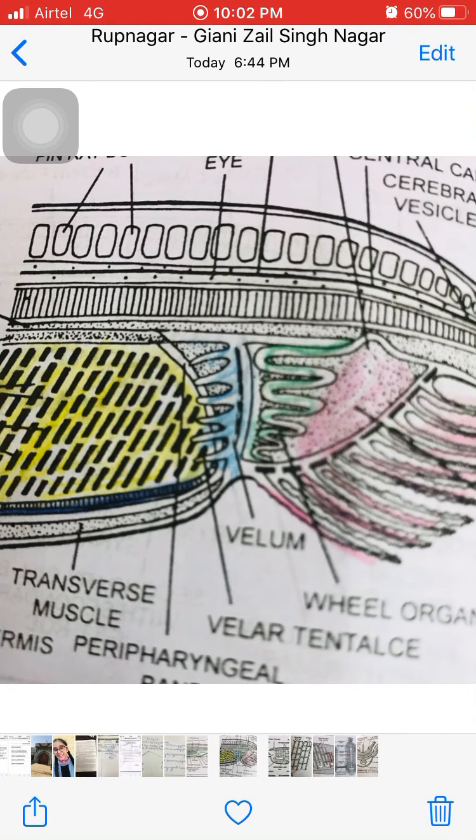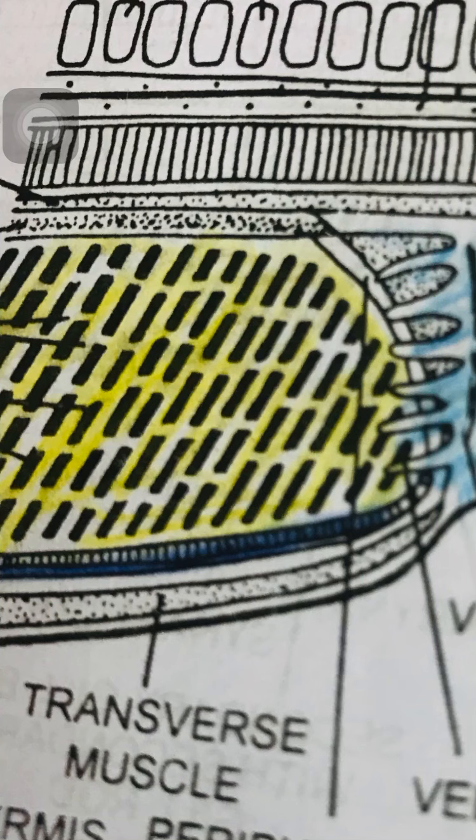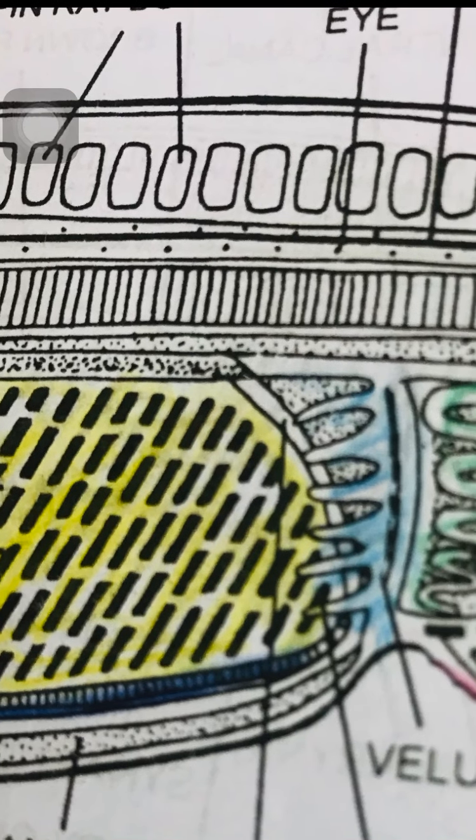The number of gill slits increases with age. New gill slits are added on the posterior side, always on the posterior side.